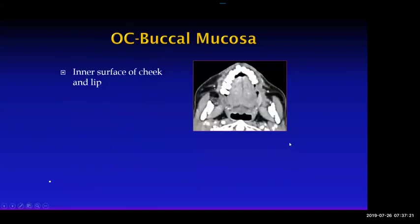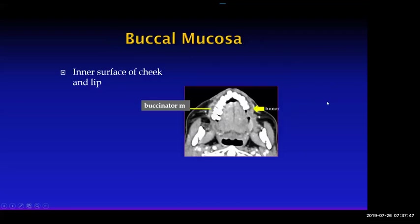Let's talk about buccal mucosa cancers — and this is where I show you cancers I've missed. On this image, it looks like there's a little bit of extra soft tissue on the left side — and that's the tumor. I probably would have missed this. If you don't have history, it's really, really hard to find these. The good news is the surgeon probably already knows the cancer is there.